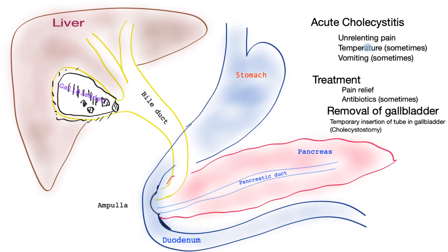The symptoms typically are unrelenting pain, as opposed to pain that goes away after about half an hour to six hours. Sometimes patients may have a temperature and may vomit. This pain is typically on the right side of the abdomen under the rib cage, tending to radiate to the right side.